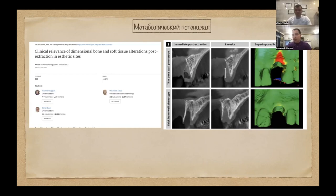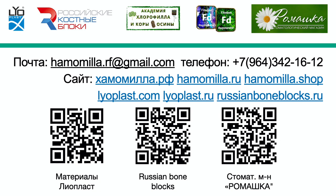Работая с методом допплерографии при оценке дёсны, мы пока не можем вывести взаимосвязь с конституциональным типом. Но мы видим, что нет смысла работать с исходными значениями — у каждого пациента они свои. Мы оцениваем разницу между тем, что было у пациента, и тем, что получили после операции: после постановки формирователя дёсны, имплантата, применения геля и так далее. Продолжение следует.